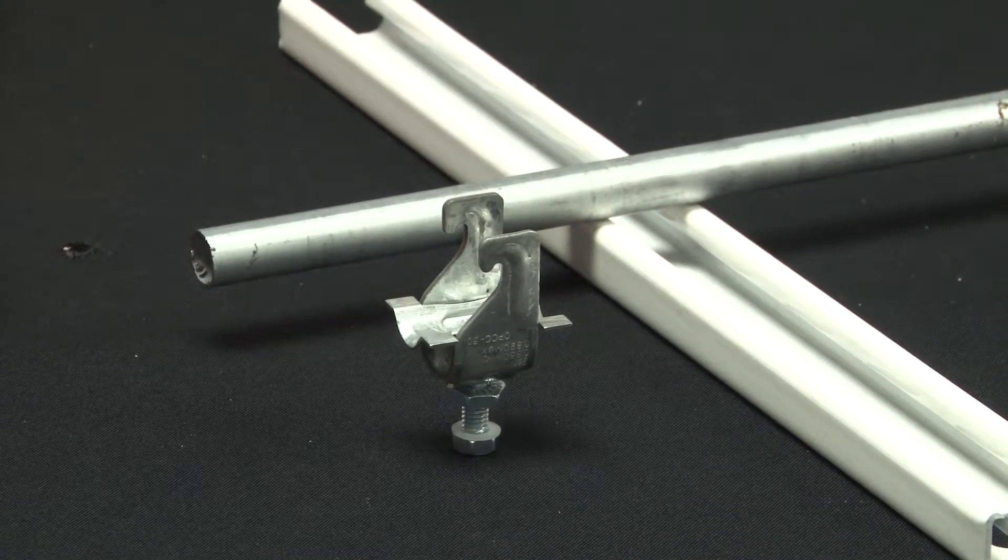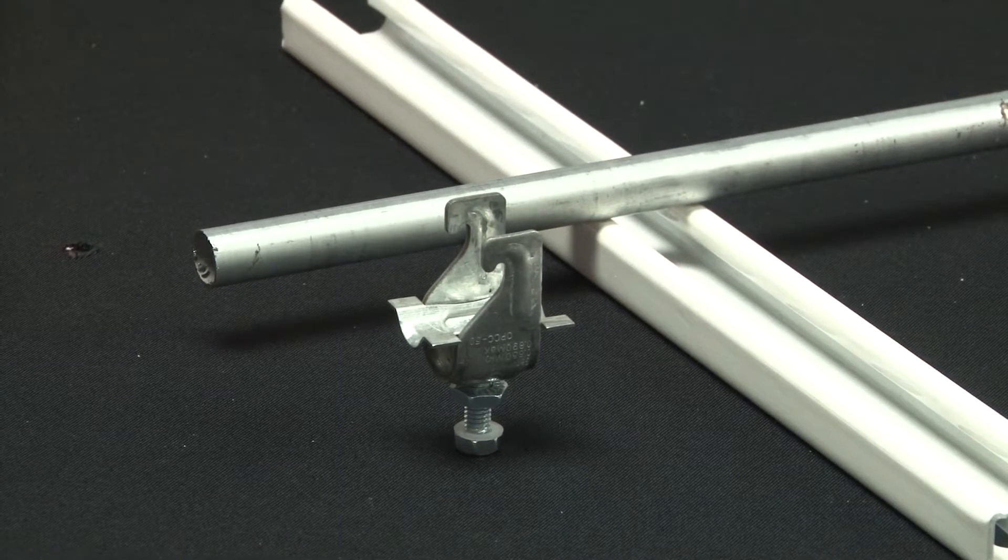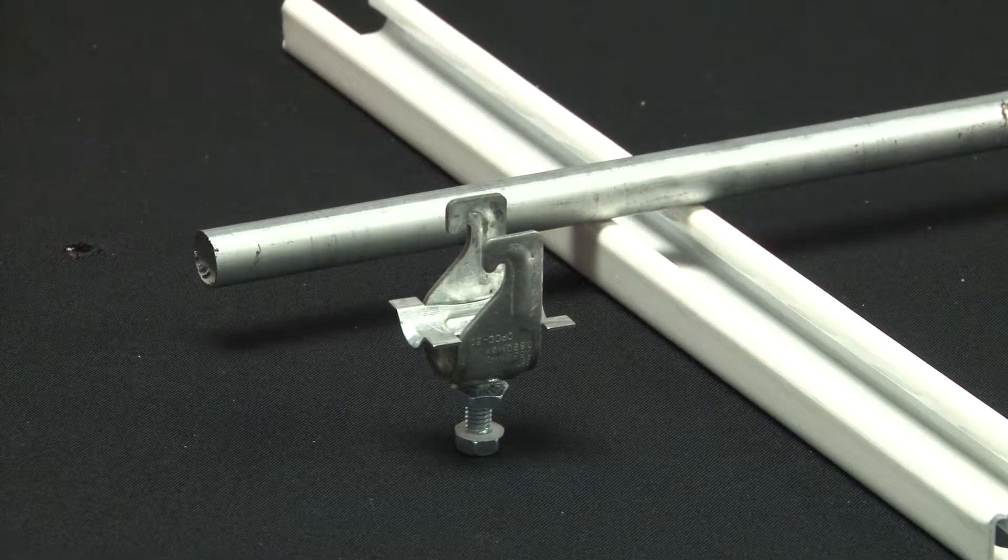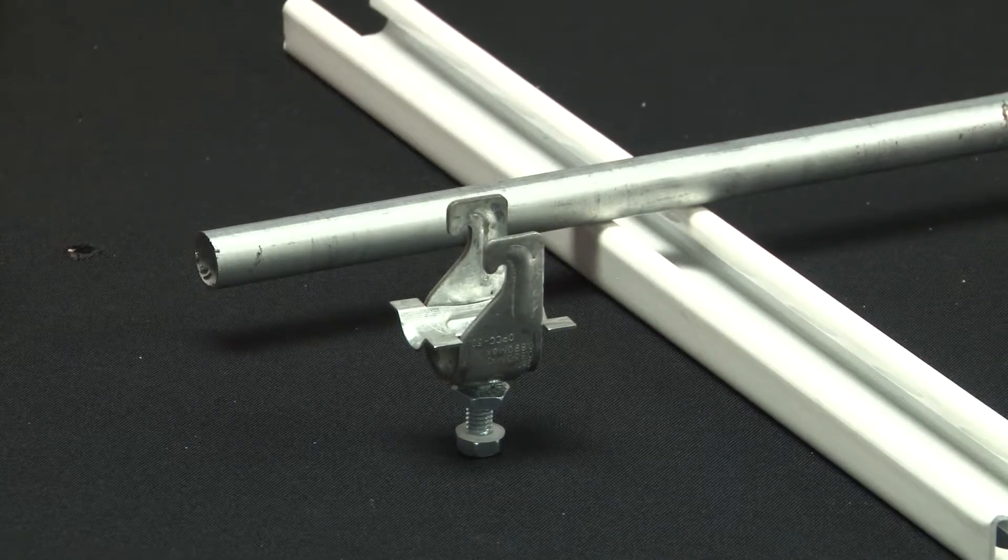For the fastest and easiest way to install conduits on overhead or wall unistrut racks, call on Garvin Industries one-piece conduit clamps.